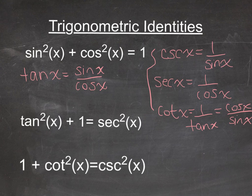And then there's a couple more identities down here. So I have tan²(x) + 1 = sec²(x), and then 1 + cot²(x) = csc²(x).